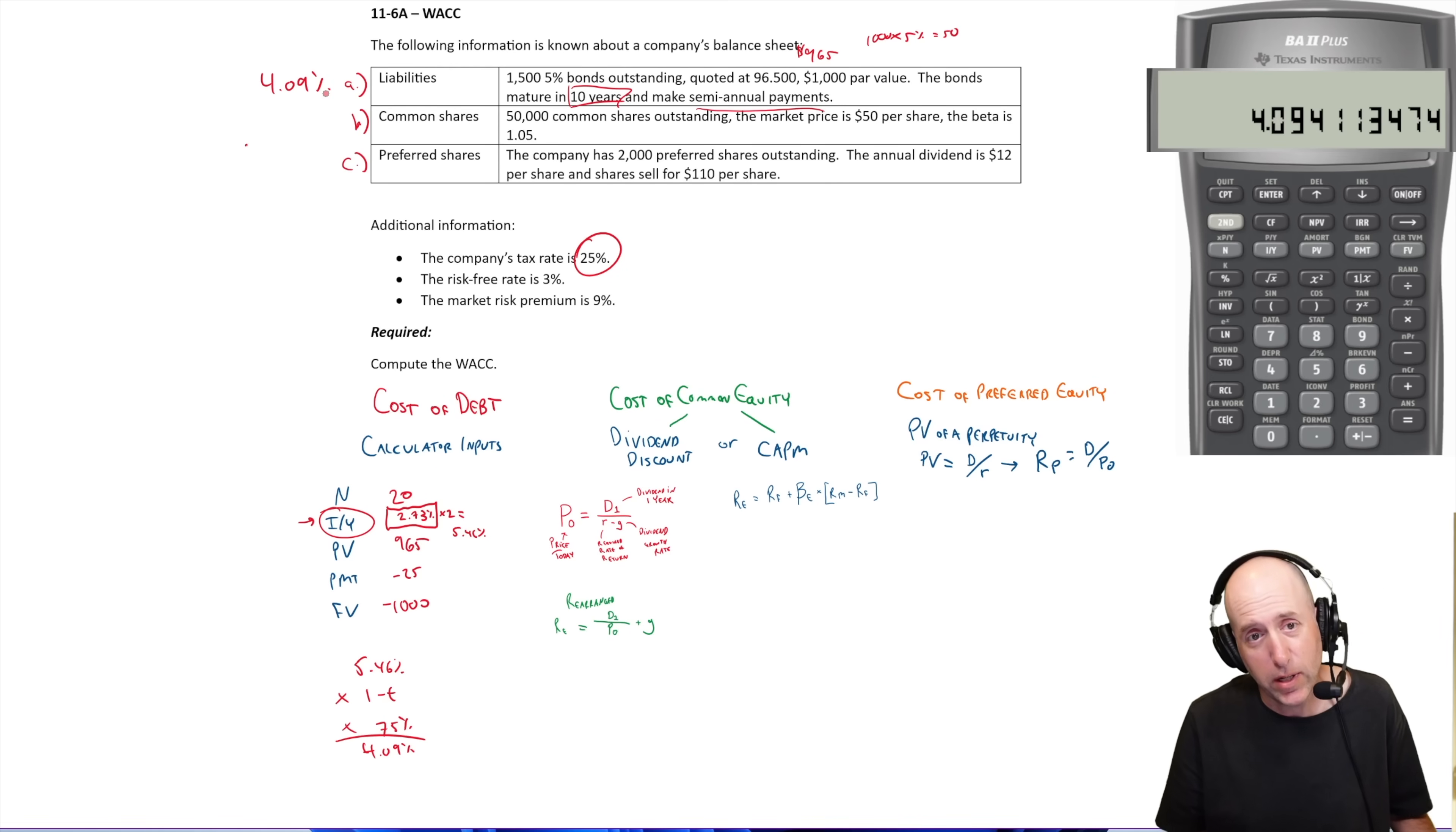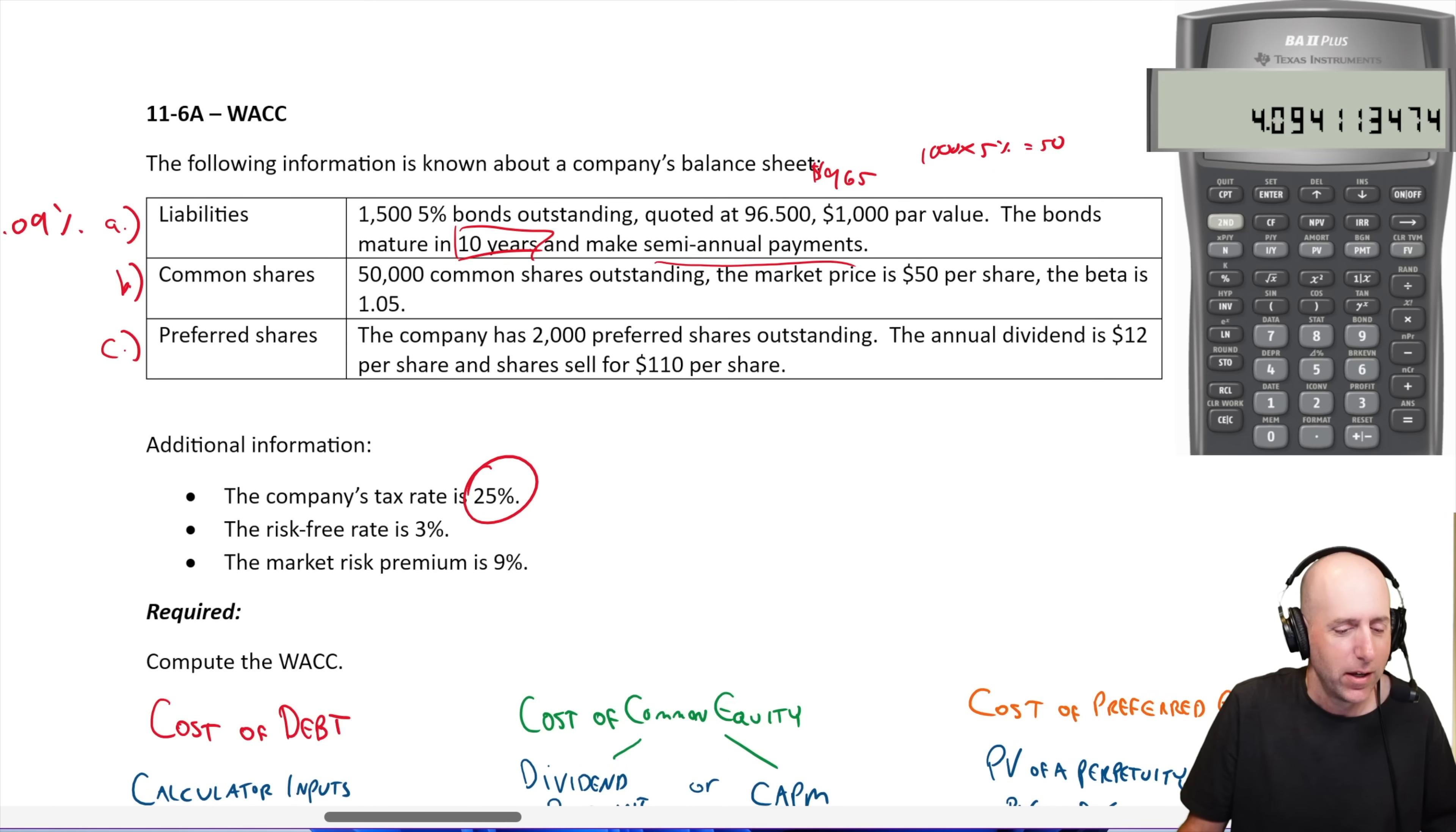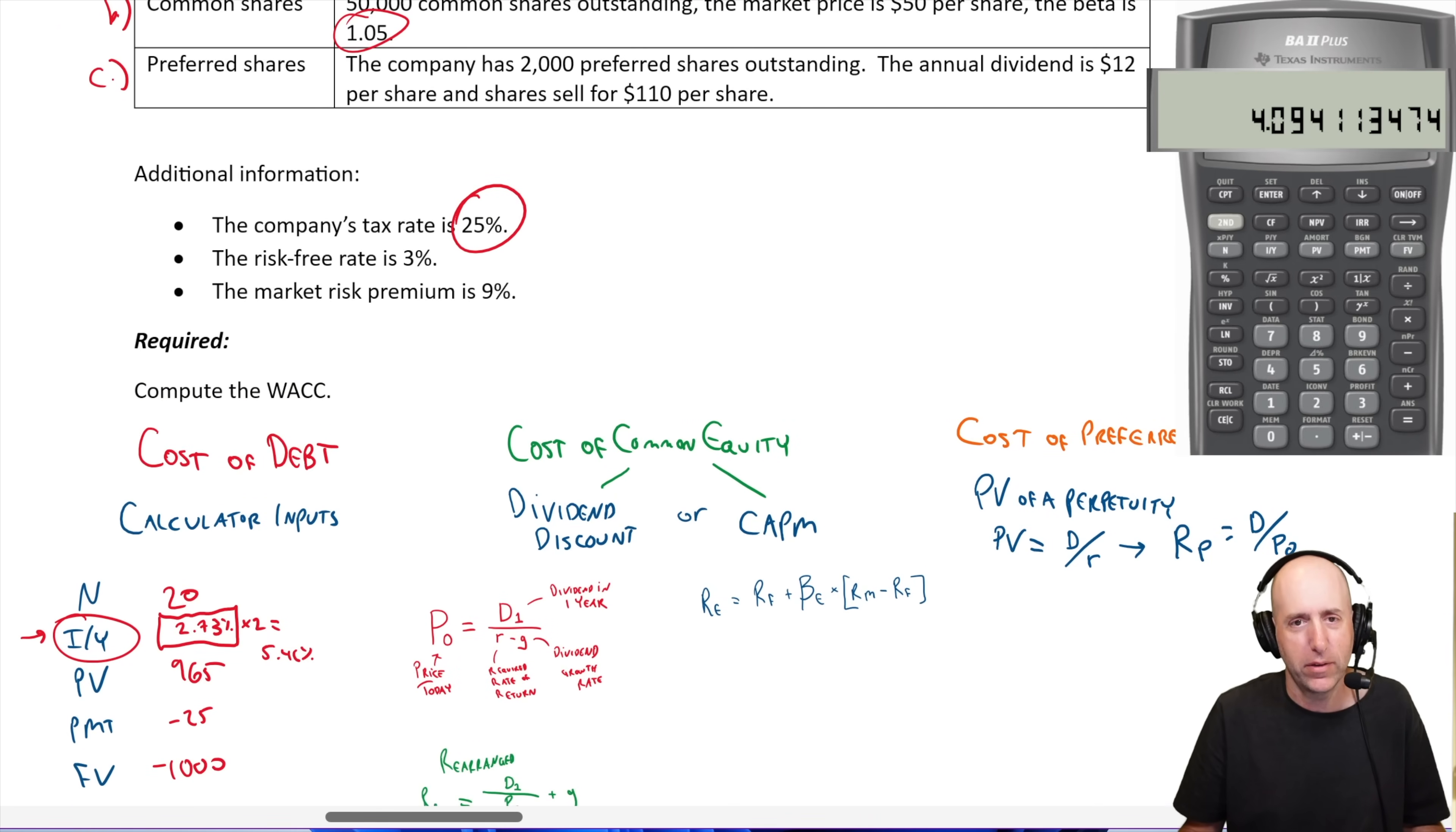Cost of equity. It's going to depend on the information given to you in the question. If you're given information about dividends and a dividend growth rate, you're going to use the dividend discount model. And this is how it would look, but we aren't. Let's read what we're given. We're given other information. It says common shares, 10,000 common shares outstanding. The market price is $50 per share. The beta is 1.05. And whenever you're given the beta, that's a sure sign. They want you to use the CAPM model, the security market line model to solve this thing.